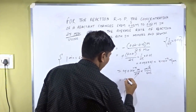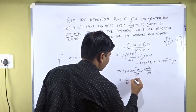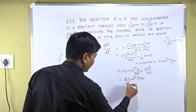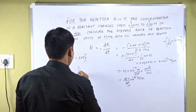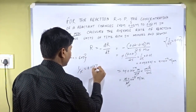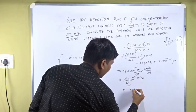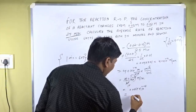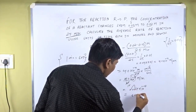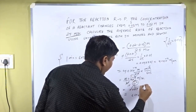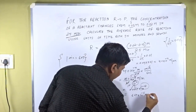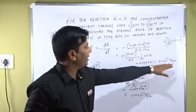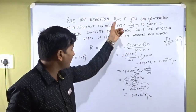Now we do the calculation: 4.0 divided by 60, multiplied by 10⁻⁴ molarity per second. Simplifying, 4/60 equals 1/15, which equals 0.0667. Therefore we have 0.0667×10⁻⁴, which can be rewritten by moving the decimal to give 6.67×10⁻⁶ molarity per second. This is the average rate of reaction for this reactant in molarity per second.